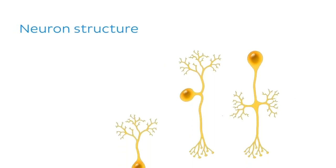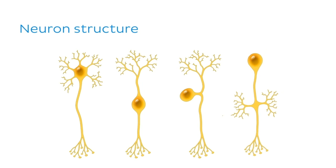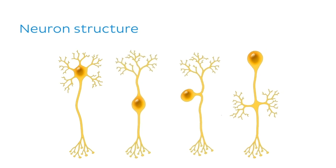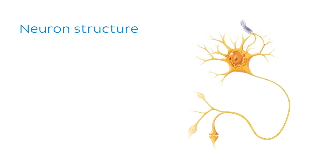As you may already know, there are several different types of neurons or nerve cells, all of which present variations in their shape and form. Let's take a quick look at a classic representation of a neuron to remind ourselves of the basic makeup of this type of cell.